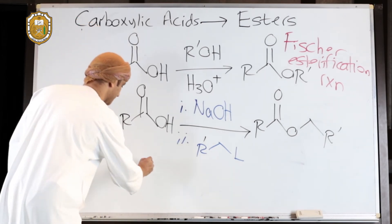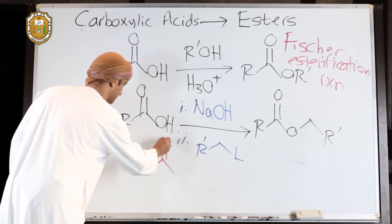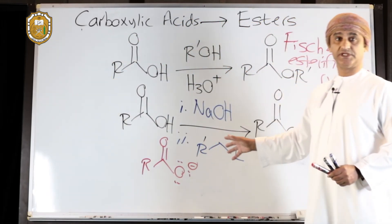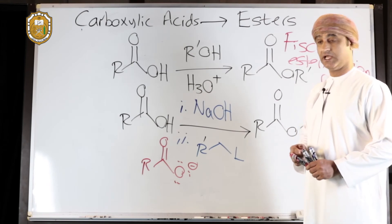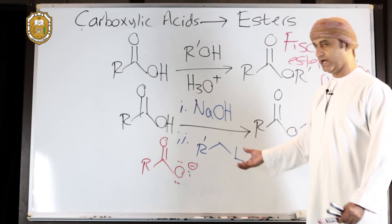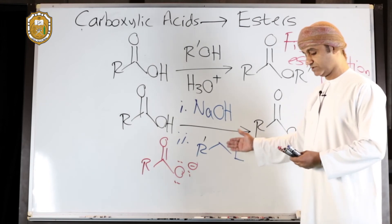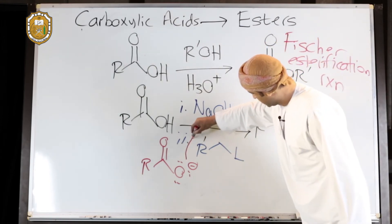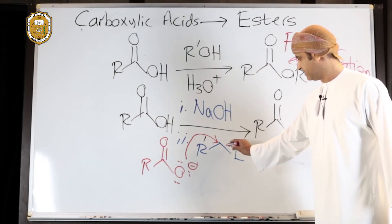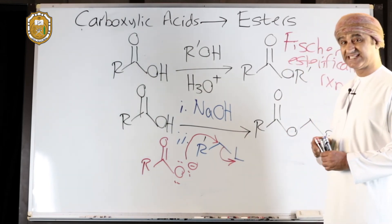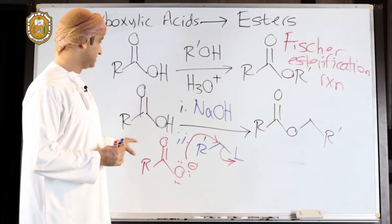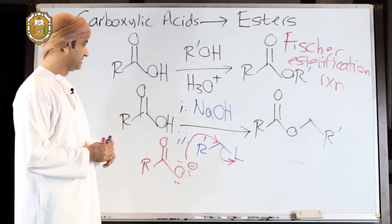When sodium hydroxide reacts with a carboxylic acid, it gives the corresponding carboxylate ion. The carboxylate ion can clearly behave as a nucleophile, and this nucleophile attacks the substrate — an alkyl halide or a substrate with another good leaving group such as a sulfonate — in an SN2-type reaction. The nucleophilic oxygen attacks the electrophilic carbon with departure of the leaving group.